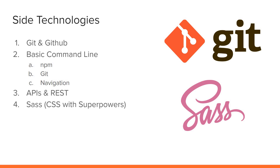There are a few side technologies that you're going to want to learn as well. Git and GitHub — Git is a version control system, and in my opinion it's the most popular version control system out there. There are others, but the majority of companies use Git. It's more commonly used with GitHub as its remote repository. Next, you're going to want to learn some basic command line: NPM (Node Package Manager), the Git command line, and basic navigation — how to create files and folders and navigate the folder structure. Very basic things. Don't let the command line scare you.